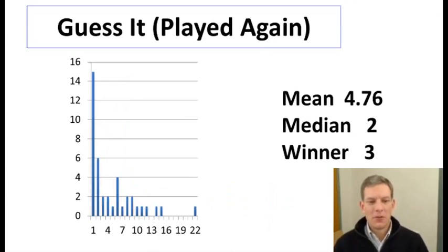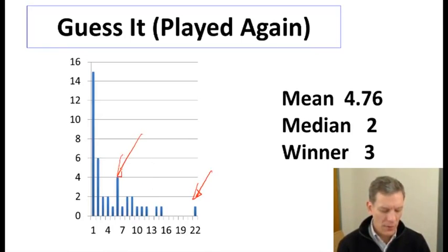So actually what we can look at now is suppose we play this game again. This is the histogram from the second time that the students played after they'd seen the results from the first time. And once they'd seen those results, they realized that people were bidding much lower than they initially thought. So now we don't see anybody bidding above 22, which was the highest bid, and we see many more of the bids very low. And in fact, the mean here is much lower than the 18—it's down to 4.76. The winner in this case was three.